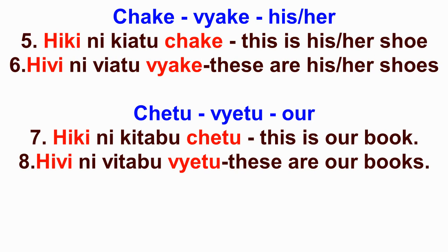Third person singular: chake and vyake — means 'his' or 'her.' Sentence five: hiki nikiatu chake — this is his or her shoe. Sentence six, in the plural: hivi niviatu vyake — these are his or her shoes.